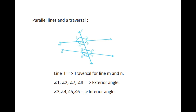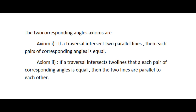The two corresponding angles axioms are: Axiom 1 — if a transversal intersects two parallel lines, then each pair of corresponding angles is equal. Axiom 2 — if a transversal intersects two lines such that each pair of corresponding angles is equal, then the two lines are parallel to each other.